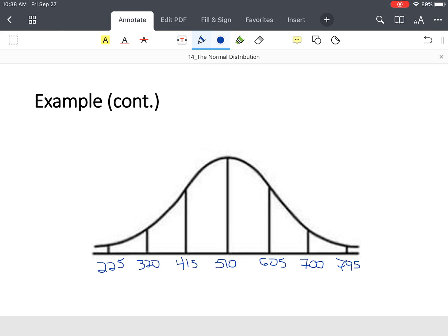If I drew the curve first, I can use this graph and say 68% of the data is 415 to 605. 95% of the data is between 320 and 700. And then the overwhelming majority of the data is between 225 to 795.